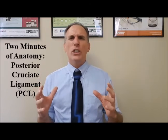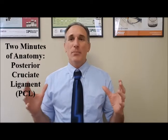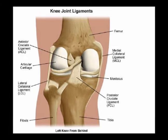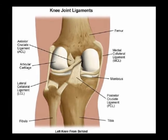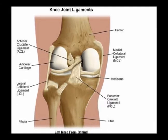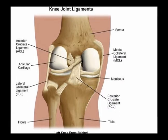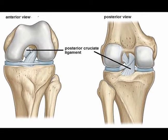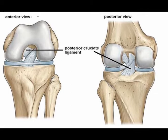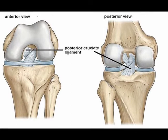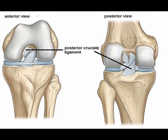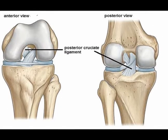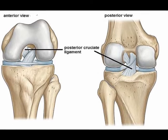The posterior cruciate ligament is often abbreviated to the PCL. It is a very important structure because it helps provide stability to the knee joint by preventing an excessive amount of posterior tibial translation. The tibia is the large bone in the lower leg.